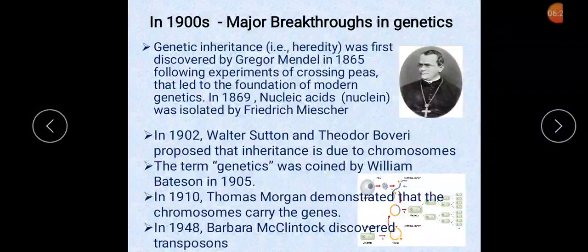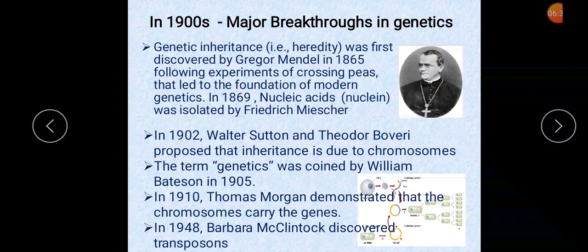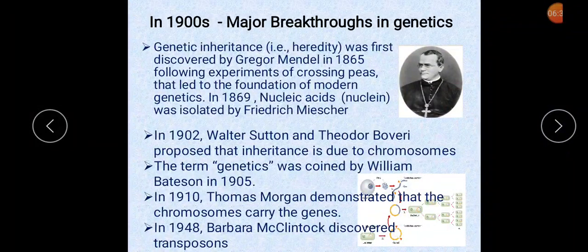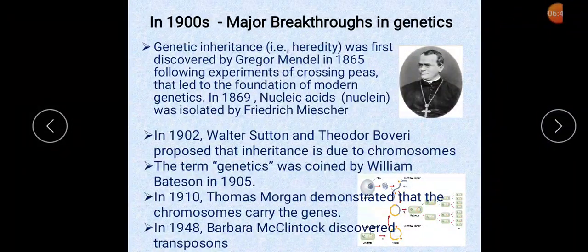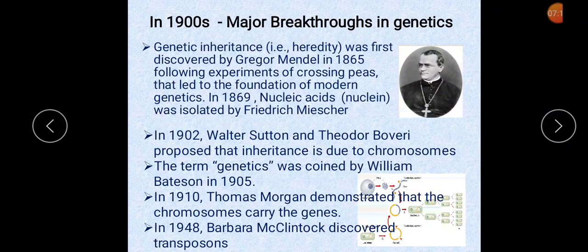In the 1900s, major breakthroughs in genetic engineering include: genetic inheritance, first discovered by Gregor Mendel in 1865. In 1869, nucleic acids were isolated by Frederick Mischer. In 1902, Walter Sutton and Theodore Bovary proposed that inheritance is due to chromosomes. The term genetics was coined by William Bateson in 1905.